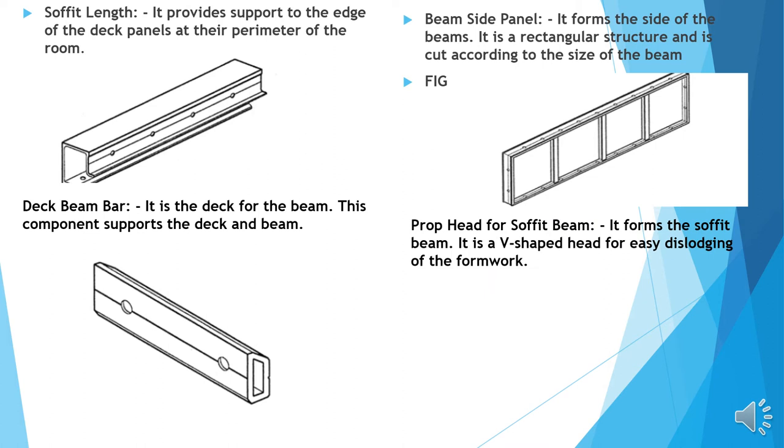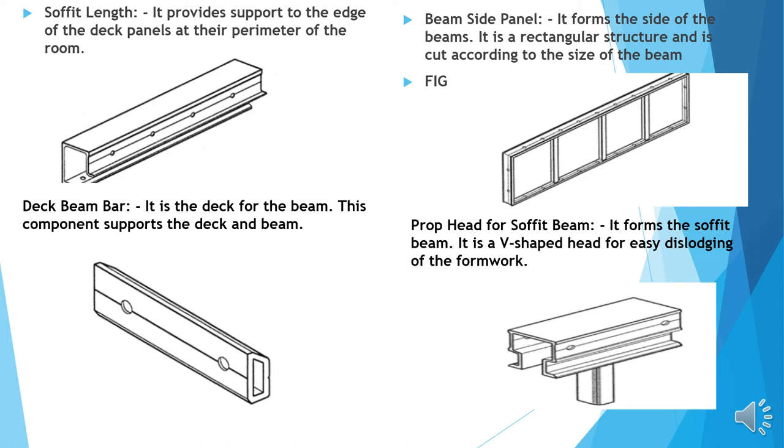Prop head for soffit beam: It forms a soffit beam. It is a V-shaped head for easy dislodging of the former. This is the thing which we call as a prop head for a soffit beam.